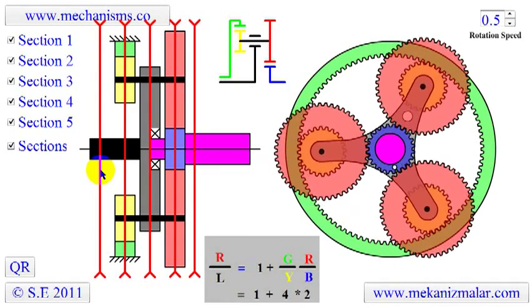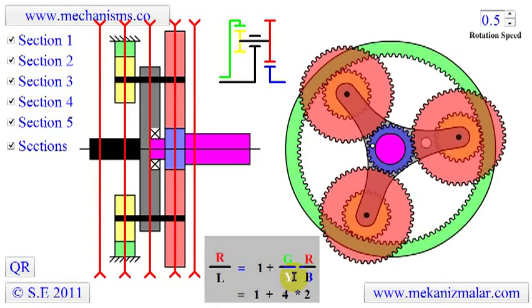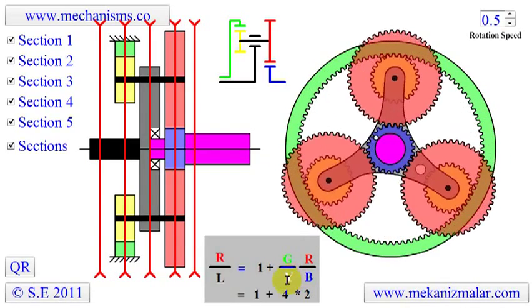The color and the character R, G, B, and Y shows the number of teeth on the red, green, blue, and yellow gears.